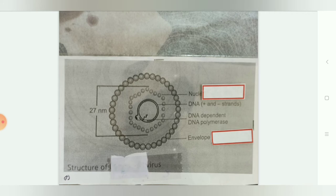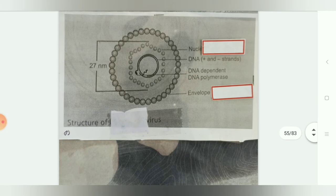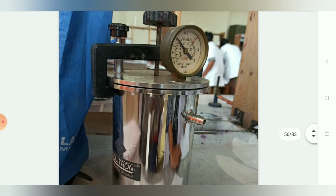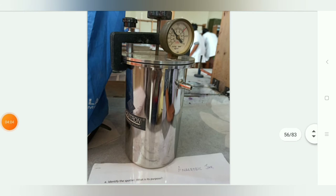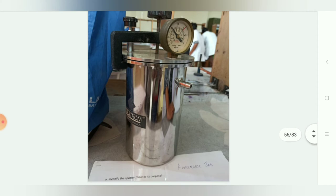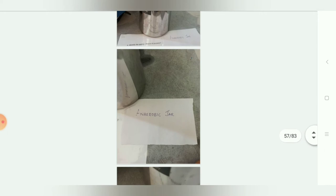The next spotter shows an anaerobic jar. Its purpose is to produce anaerobic conditions for the growth of anaerobic bacteria. It is also known as the McIntosh and Fildes jar. Name two bacteria for which it is used: Clostridium and Actinomyces.